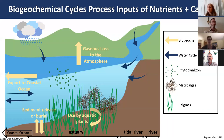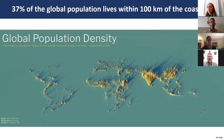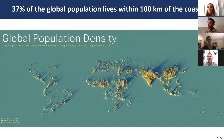Because estuaries provide valuable ecosystem services, humans tend to live on coastlines. The UN estimates 37% of the global population lives within 100 kilometers of the coastline, as visually represented by a 3D global population density map where taller spikes indicate higher population density—and you can clearly see the outline of all continents, showing people accumulate along coastlines.